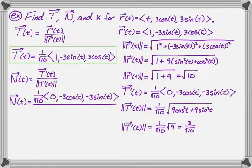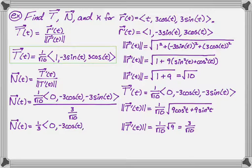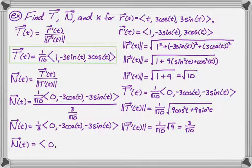And then divided by the magnitude of this, which we found was three over root 10. And one over root 10 divided by three over root 10 is just one third. So we get one third, and then our vector zero, negative three cosine, negative three sine. And if we distribute the one third, which seems like a really good idea because everything has a common factor of three, we find that N as a function of t equals zero, negative cosine of t, and negative sine of t, which feels very unit circle-y.